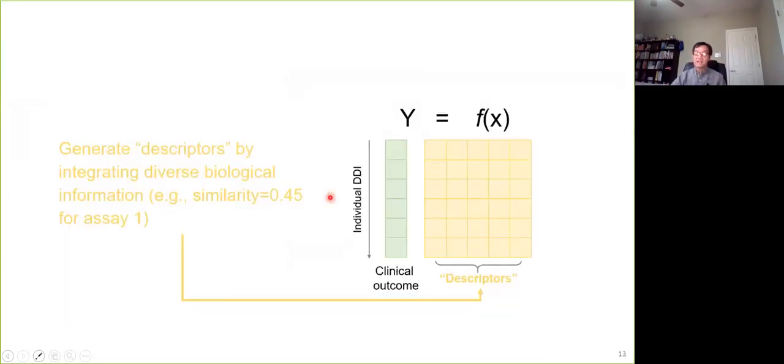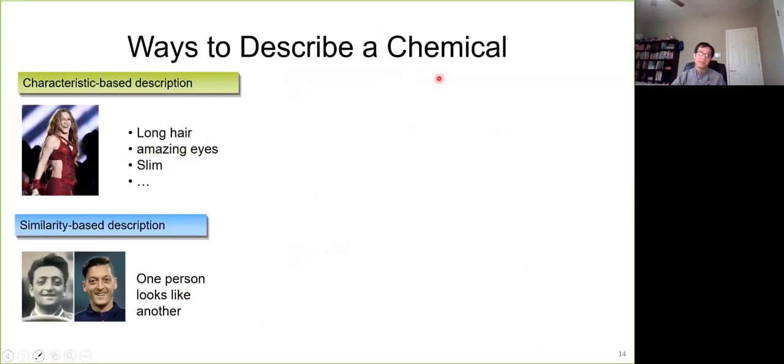So once we have the clinical outcome for individual drug-drug interactions, we think about how we can generate the descriptors by integrating diverse biological knowledge to describe the DDI. So first question, we think: ways to describe a chemical. Take one step back, we think about how to describe a person. Basically, we have two strategies. One is characteristic-based description. Another one is similarity-based description. If you look at these figures, this is the famous singer, Shakira. She just did a wonderful show in the Super Bowl 2020. We can use some characteristic words like long hair, amazing eyes, slim, to describe her.